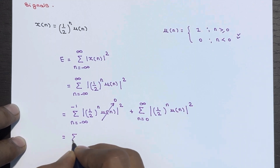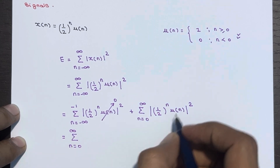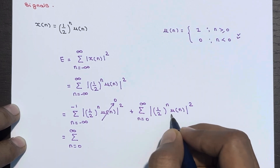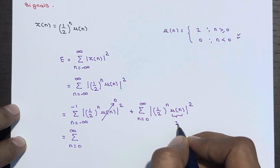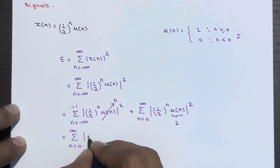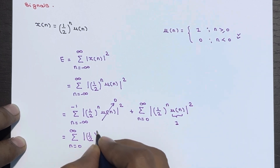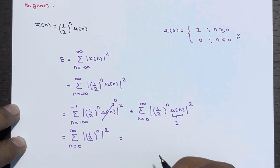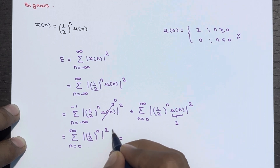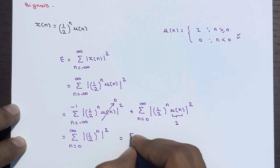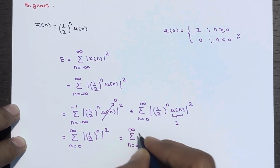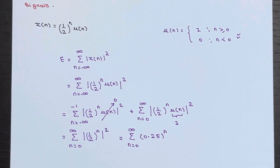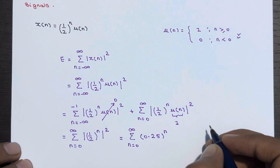So we are left with the summation from n = 0 to ∞. During this period, u(n) = 1, so we replace it with 1. What remains is |( 1/2)^n|². We can write 1/2 as 0.5, and 0.5 squared is 0.25, so the expression becomes the summation from n = 0 to ∞ of (0.25)^n.